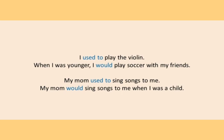Let me give you a clearer picture with more examples. First sentence: 'I used to play the violin.' Here I am just talking about a past action that happened and was completed in the past itself — we are not emphasizing on any time period. The second sentence: 'When I was younger, I would play soccer with my friends.' Here I am emphasizing on the time 'when I was younger', so that's why I used 'would play soccer with my friends'.